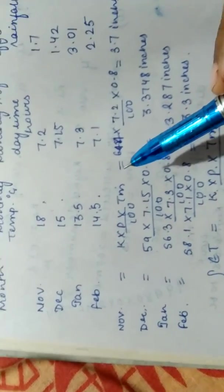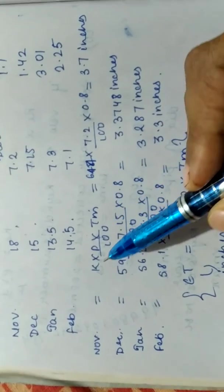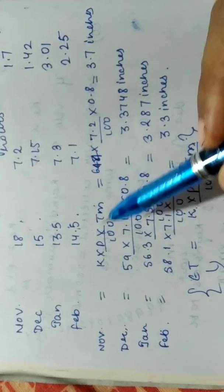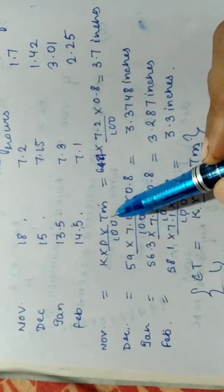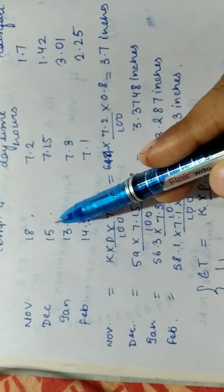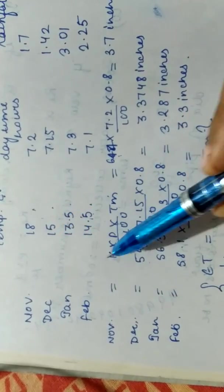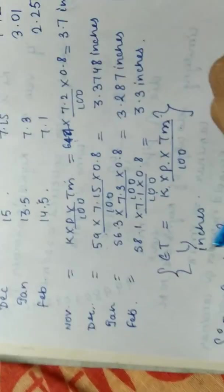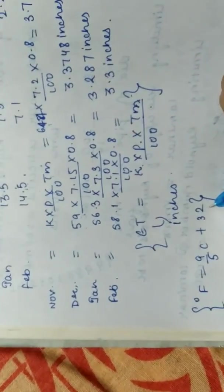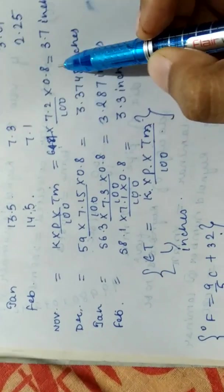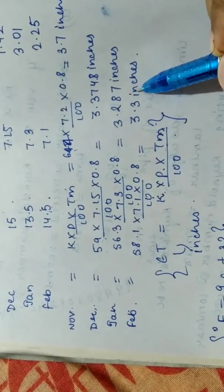So here, as you can see, I have done the calculation. So K value is 0.8, P is 7.2 and temperature we have converted all these four values and have kept in Fahrenheit. Similarly, 15 degrees Celsius is 59 Fahrenheit. So using this conversion formula, we have calculated all the monthly PET values.